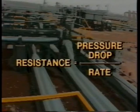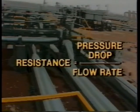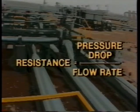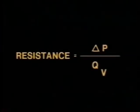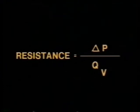Since pressure is what causes the fluid to move, a drop in pressure will affect the flow rate. These are the factors that need to be measured to find fluid resistance: pressure drop divided by flow rate. To help you remember the formula, think of QV as quantity of volume.